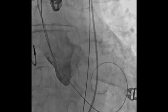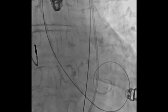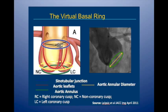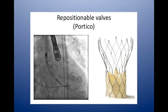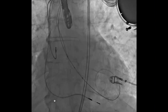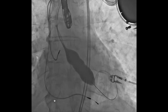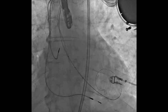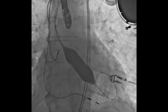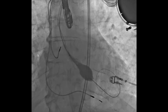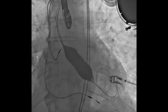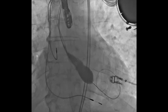The procedure we're about to show used a Portico valve. It has a very straight bottom — the LVOT part of the valve is straight, not flared like the CoreValve, and it's quite long unlike the Edwards valve. Here we're doing a balloon valvuloplasty — which is why we need to know how much aortic regurgitation there is beforehand, because it's likely to get slightly worse after the balloon. You need to have the TAVI valve ready so you can put it in straight away should you get severe AR.